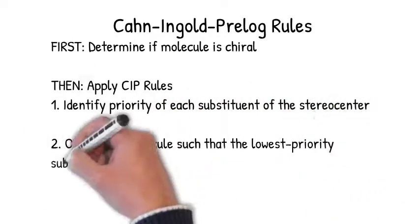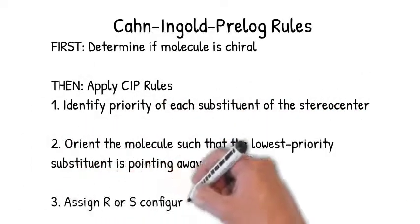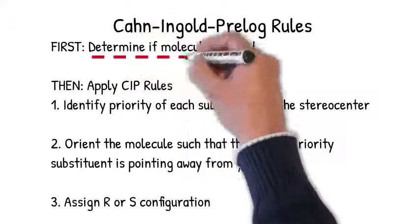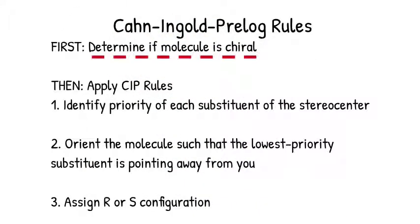But since the CIP rules only apply to stereocenters, the first step is to therefore determine if the molecule has any. If no stereocenters are present, there is nothing for you to determine the configuration of, so you don't need to apply the CIP rules.